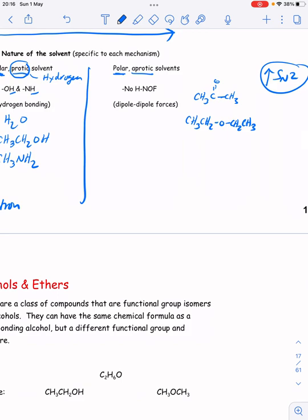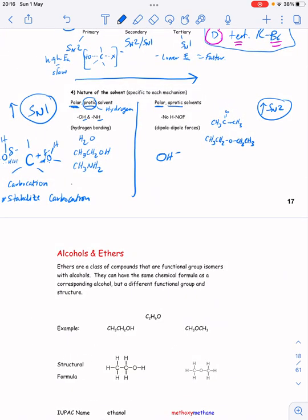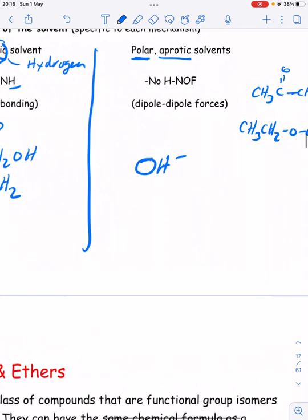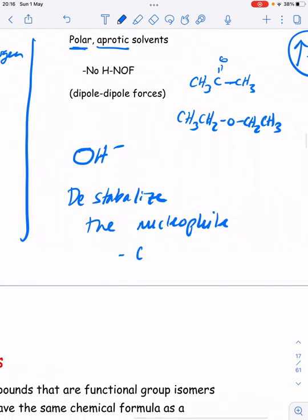The polar aprotic solvents are able to increase the rates of SN2 mechanism. That's because the nucleophile, the hydroxide, well, if you mixed it with a polar protic solvent, the ion would be surrounded by the polar protic solvent, it would sort of stabilize that ion, whereas when you use an aprotic solvent, they're not able to attract very well to the nucleophile, and so the nucleophile becomes even less stabilized. So they destabilize the nucleophile, because they can't form strong attractions with the nucleophile.